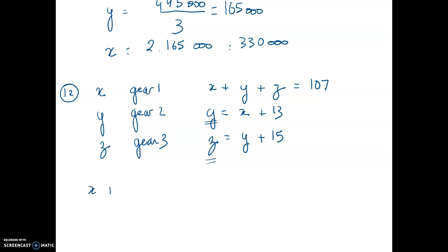And plus Z, it's going to be plus Y plus 15 equal 107. When you do that, you have one equation, two variables. You must do something else.